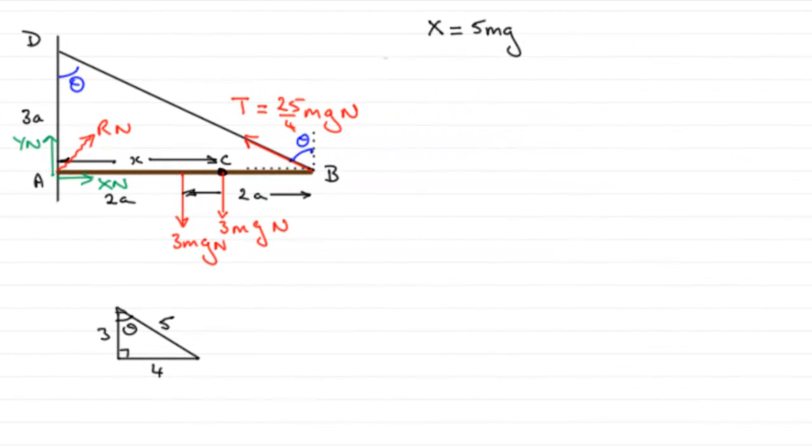Now, in this last part, we're told that the coefficient of friction between the wall and the rod is mu. And given that the rod is about to slip, we've got to find the value of mu.